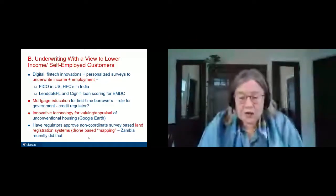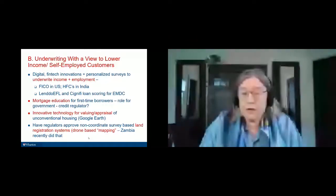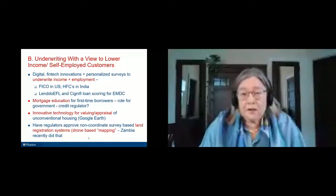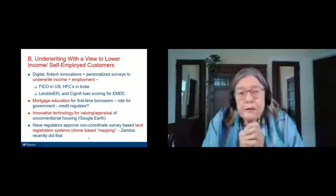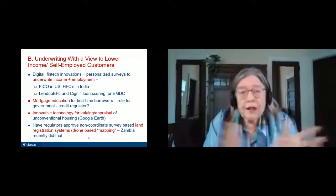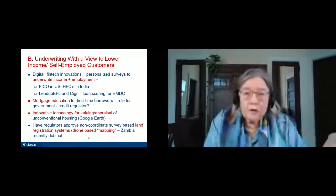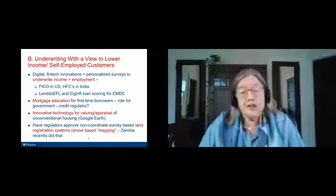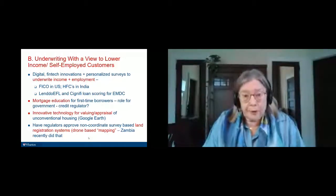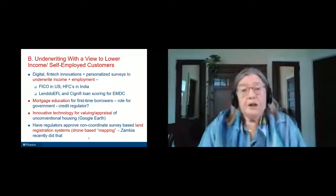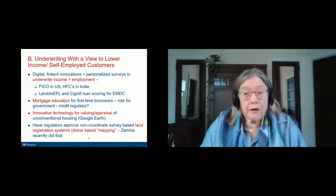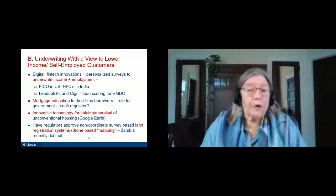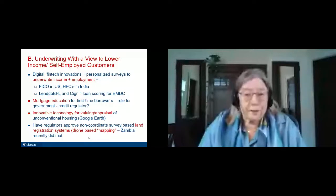Later on, they instituted a PPP-based mortgage insurance system in India. That mortgage insurance system had two components: one for formally employed normal customers, and one for more risky customers — informally employed and the like — where the government took a much larger share of the credit risk. So that is a very helpful mechanism and I'm going to talk about it in just a minute.